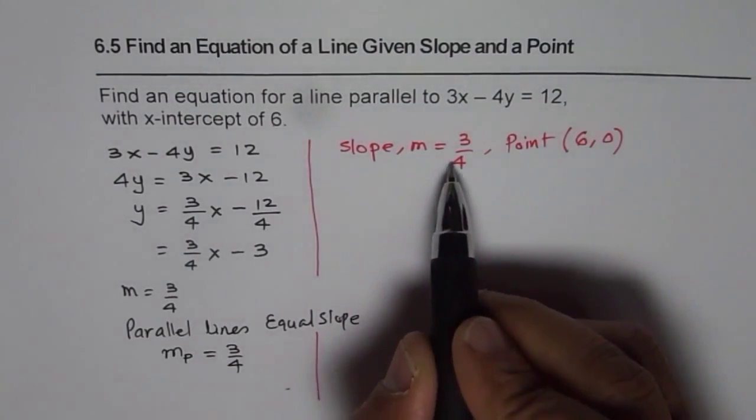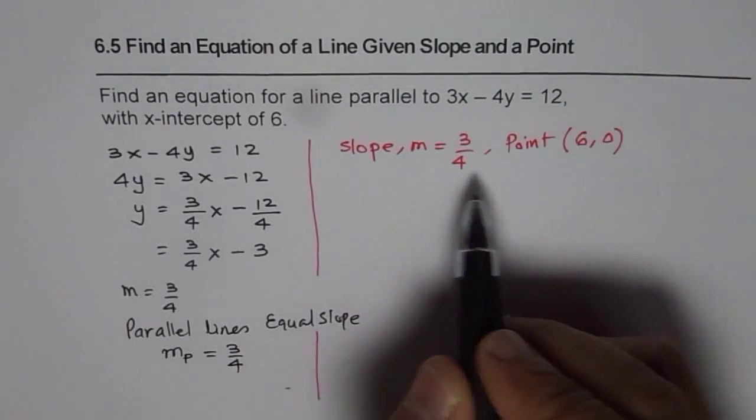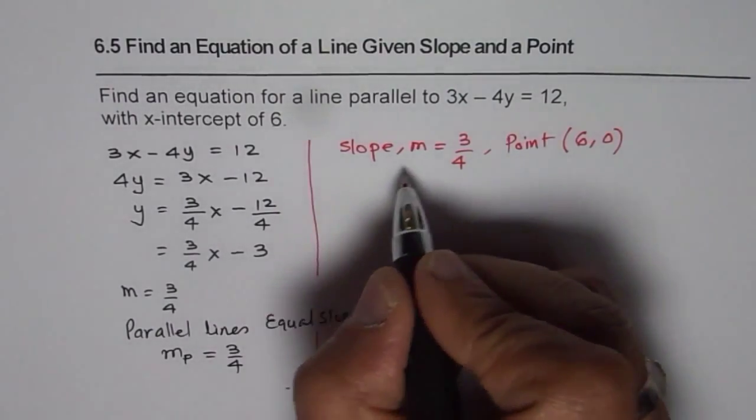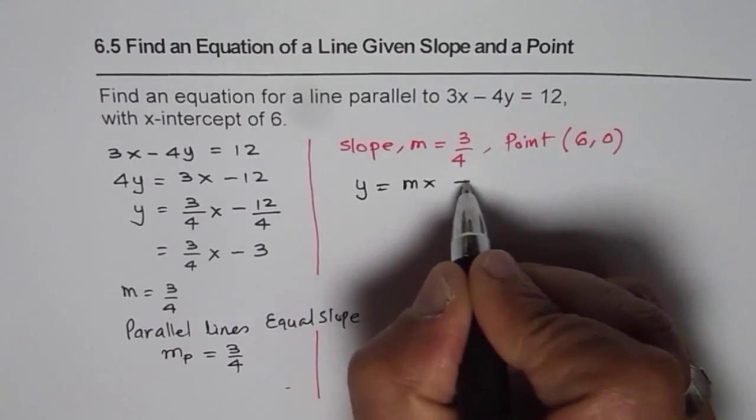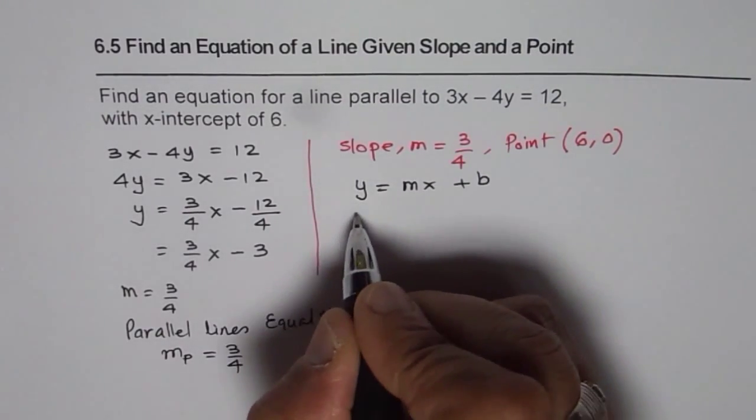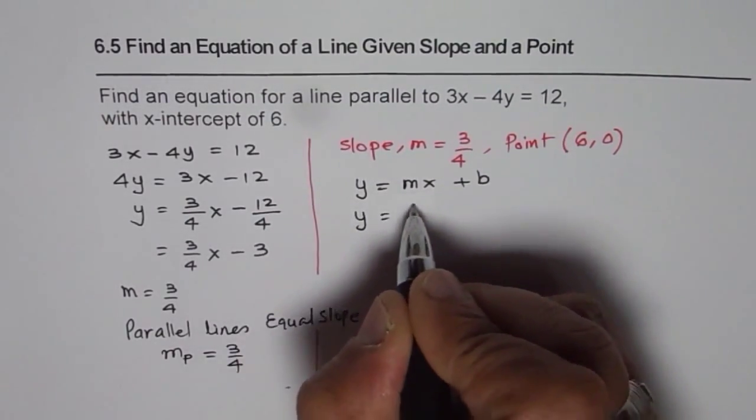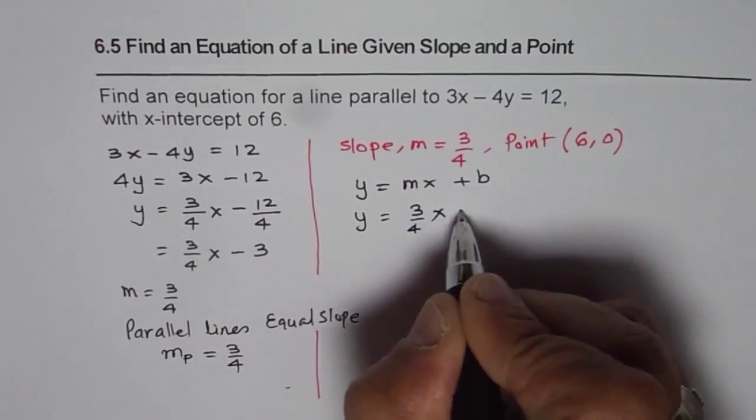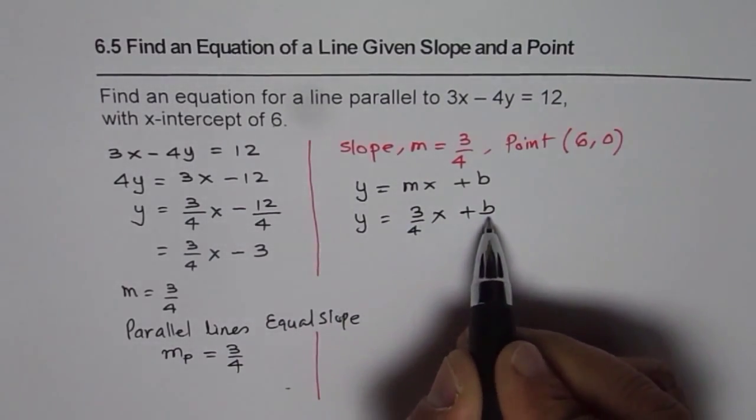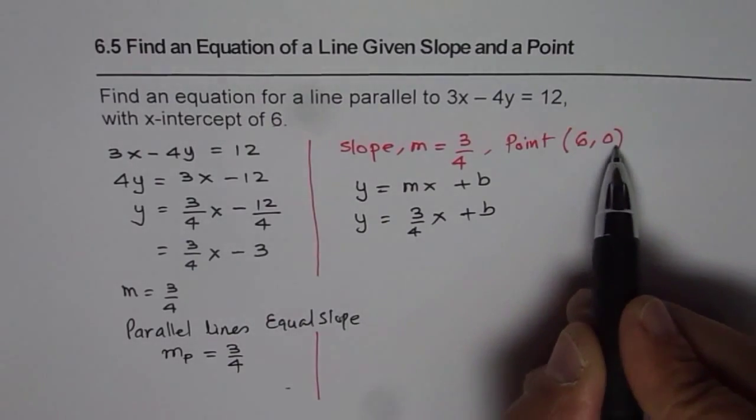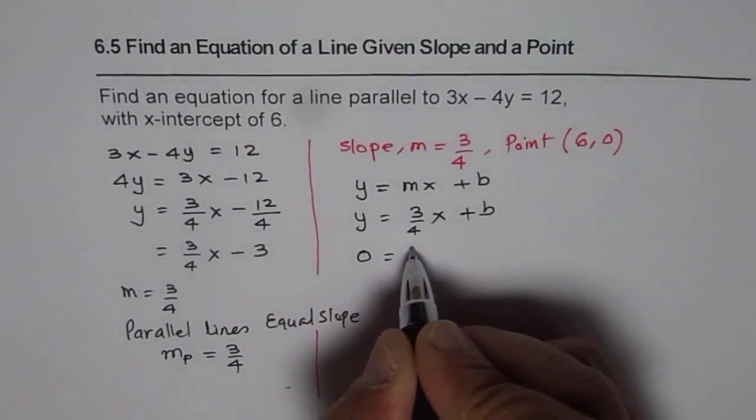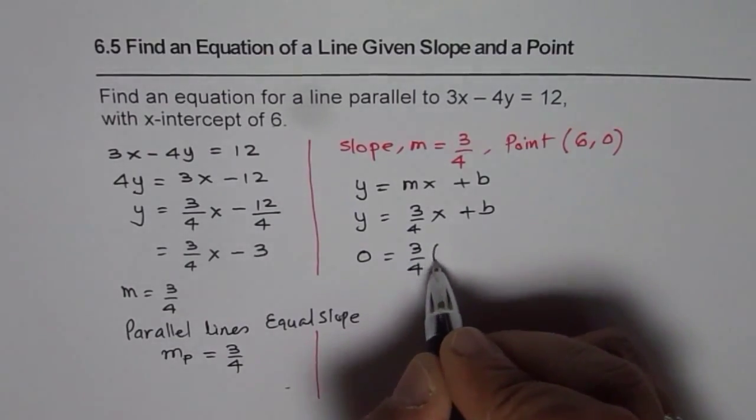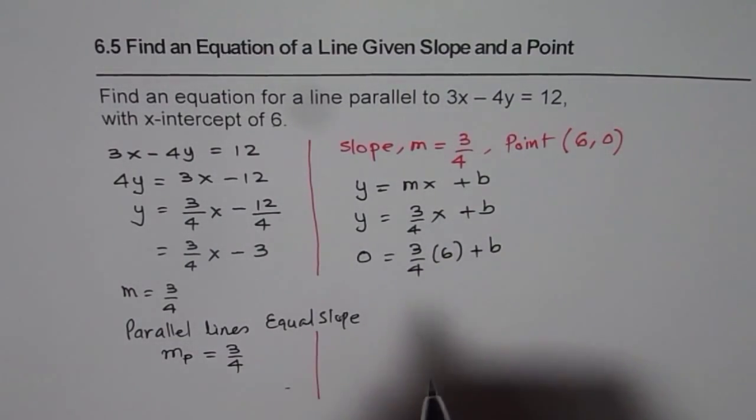Now once we know slope and a point, we can find the equation. So we can say equation of the line is y equals to mx plus b, where m is 3 over 4. So let me write first as 3 over 4x plus b. To find b, we will use the point given to us. x value is 6, y is 0. So 0 equals to 3 over 4, 6 plus b.